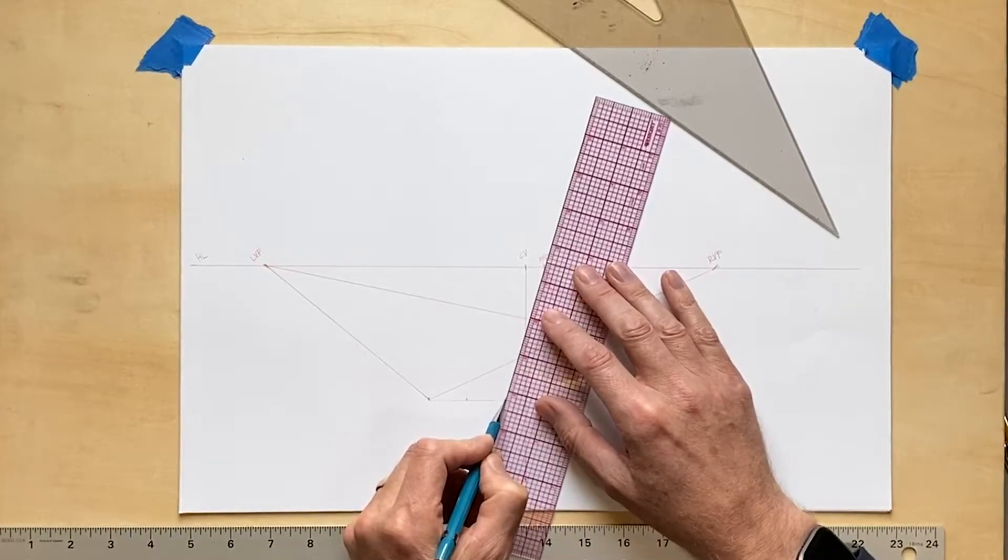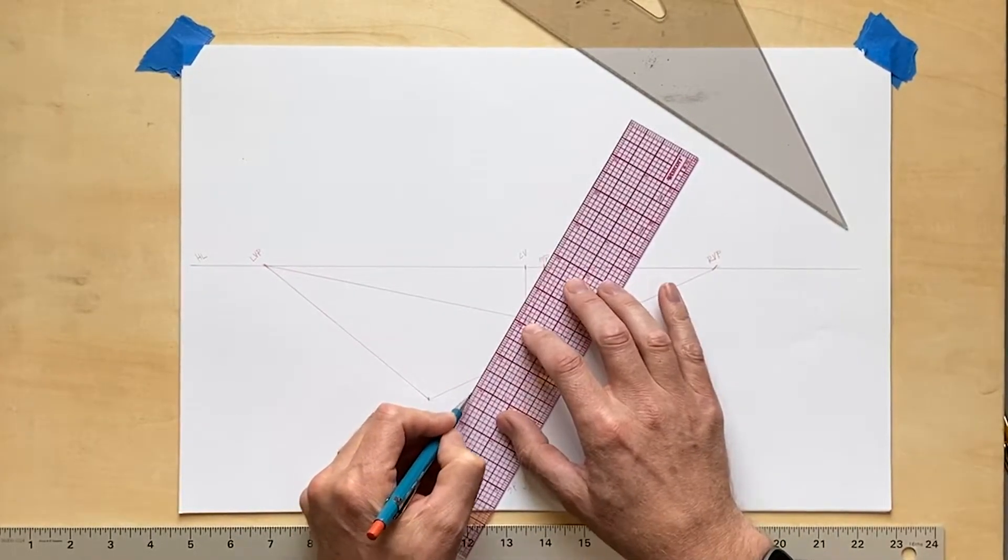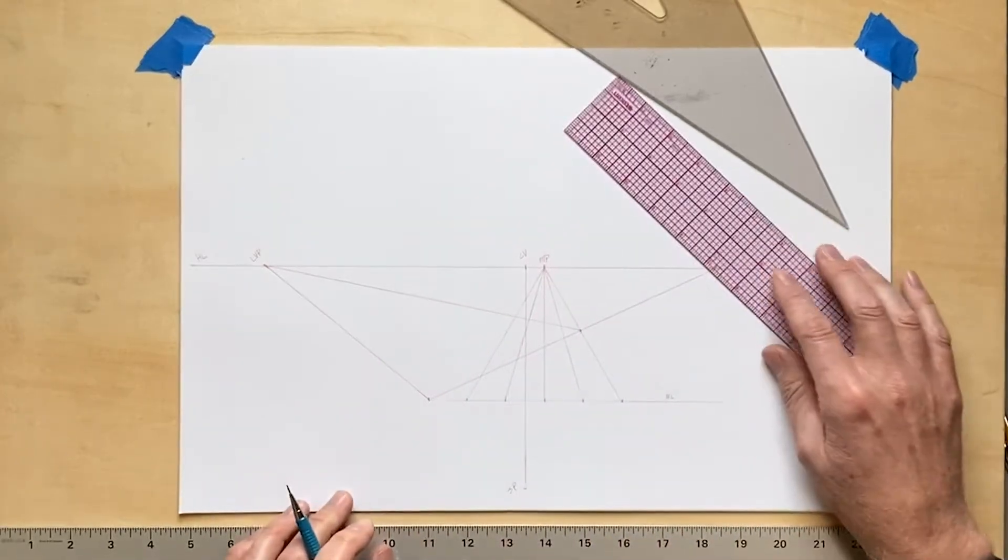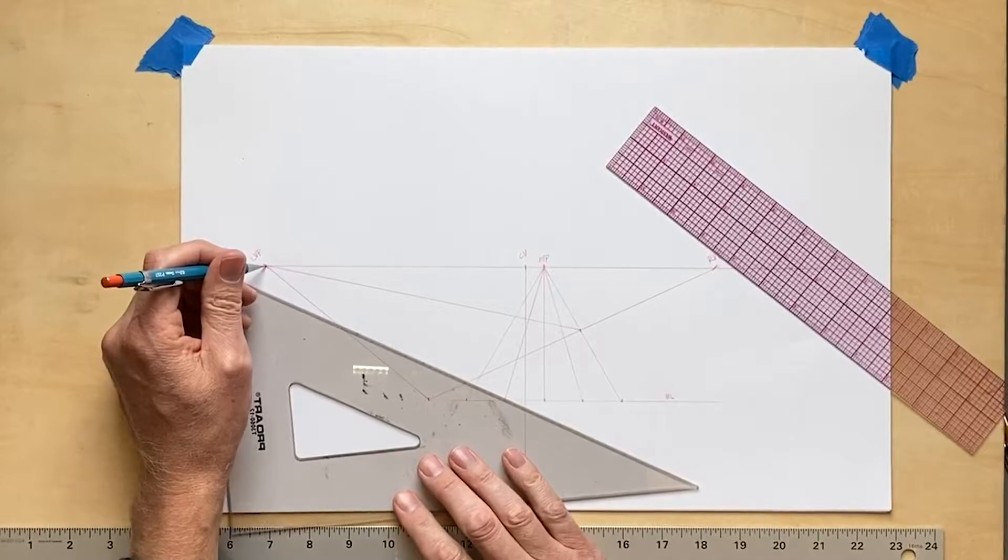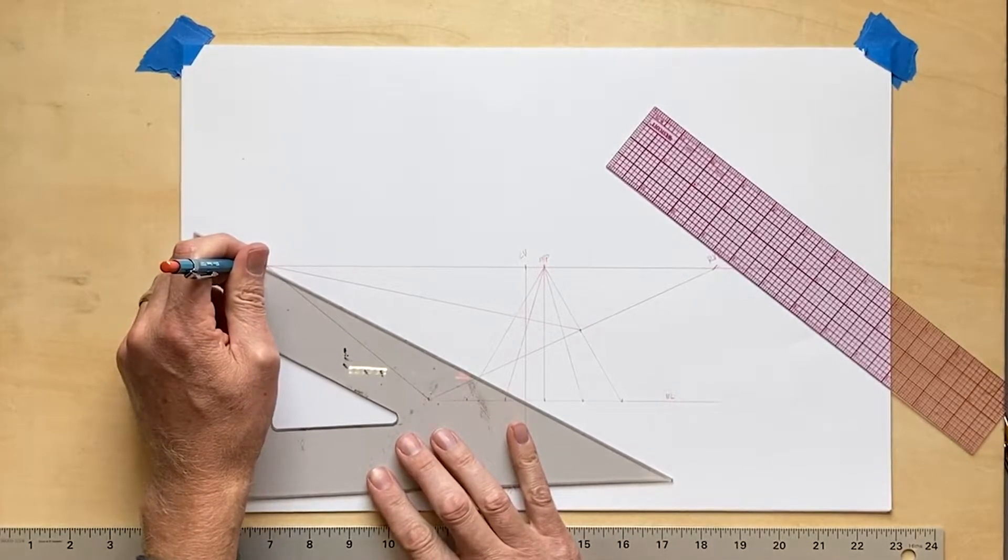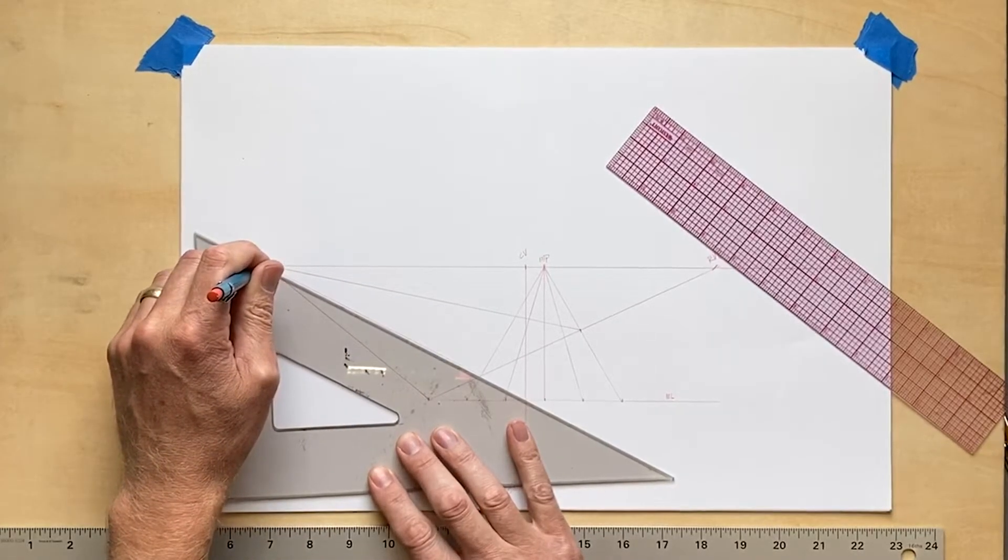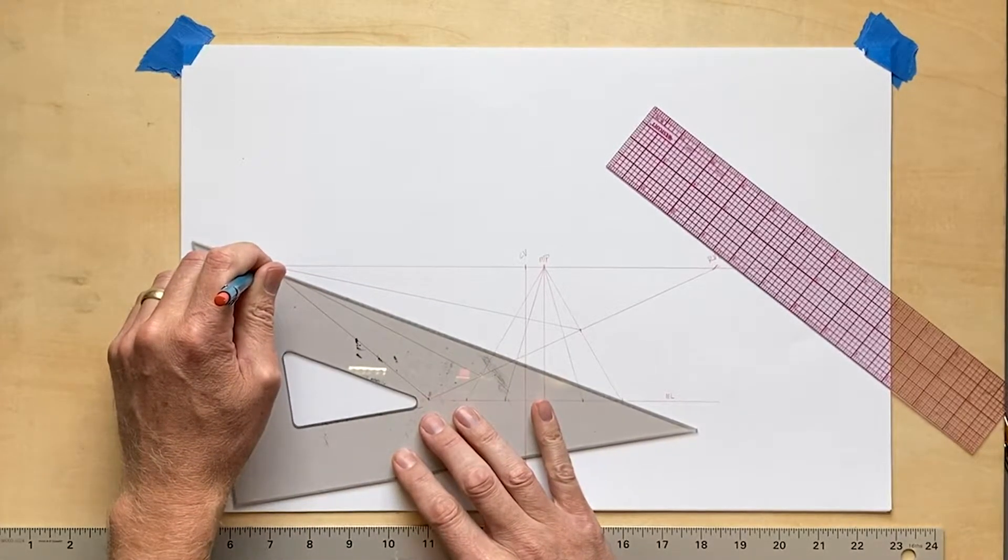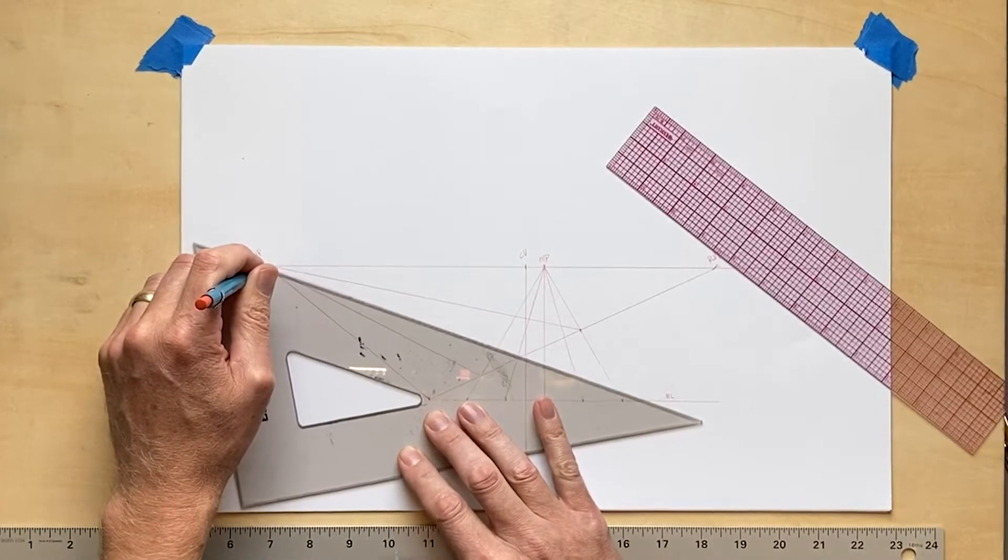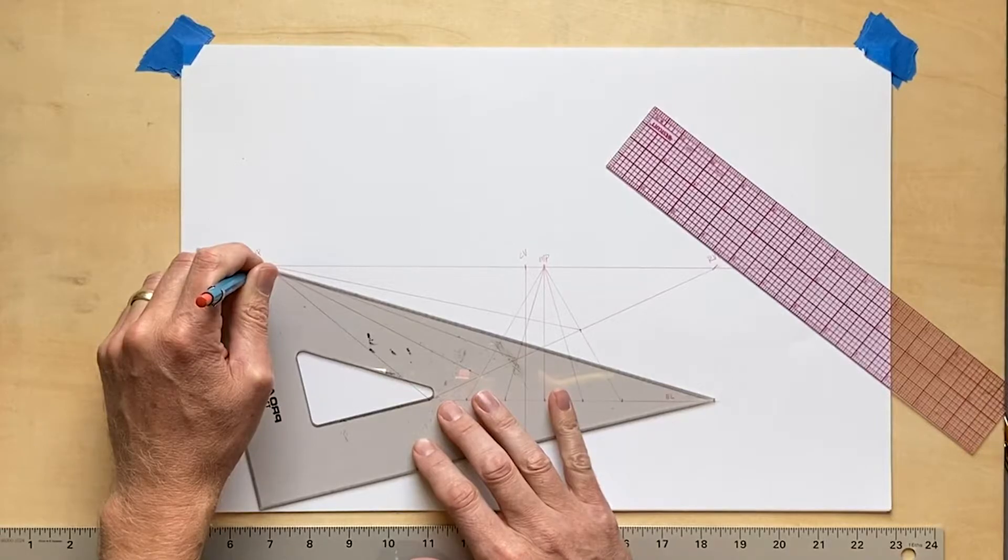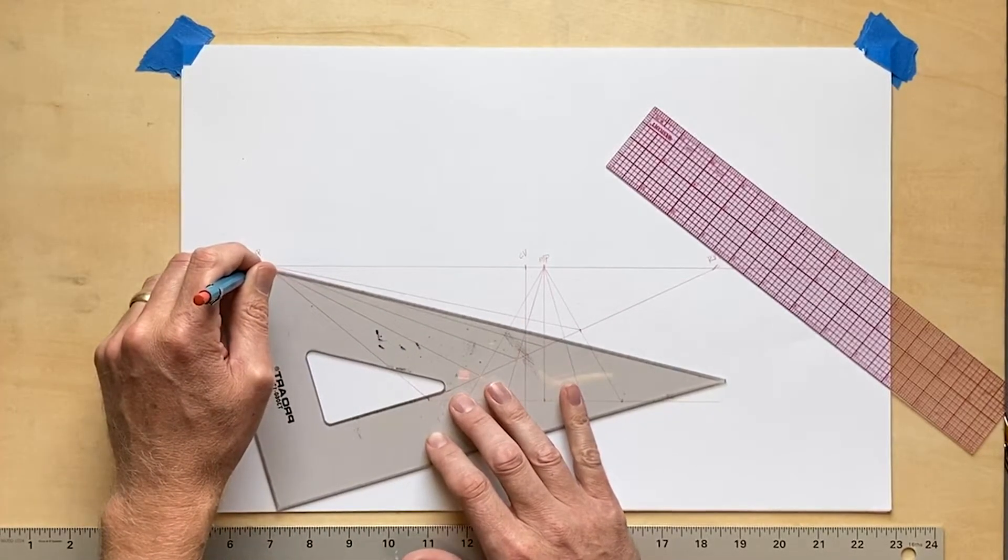And where these lines intersect the right edge I now have new points that are needed to connect to the vanishing point. So you can see as they go from my measuring point, cross through that line that runs to the right vanishing point, I get new intersections, and then at each intersection I draw a line that goes to the left vanishing point. I hope that makes sense. This is why I talk about it and draw it at the same time. It helps.